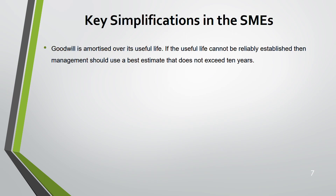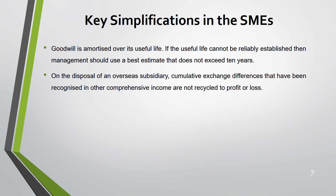Goodwill is amortized over its useful life under SMEs. If the useful life cannot be measured, assume 10 years — it cannot exceed 10 years. This differs from full IFRS where goodwill is not amortized, only impaired. Regarding disposal of an overseas subsidiary, under full IFRS the cumulative exchange differences recognized in other comprehensive income are recycled to profit and loss, but under SMEs they are not recycled.